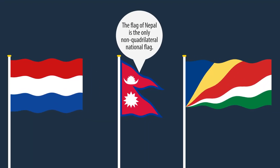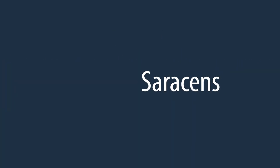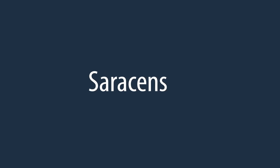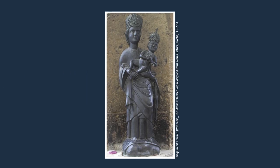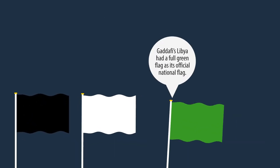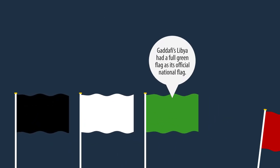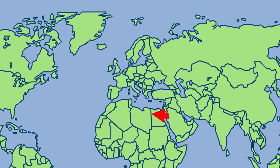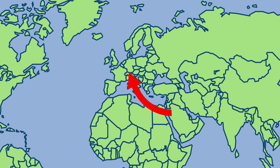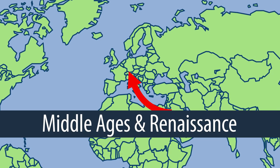National flags as we know them today were most likely originated by Islamic people — in the Middle Ages called Saracens. As Islam prohibits the use of idolatrous images, they used greatly simplified flags, using black, white, green, or red. These early flags found their way to Europe, where the first national flags were adopted in the Middle Ages and Renaissance.